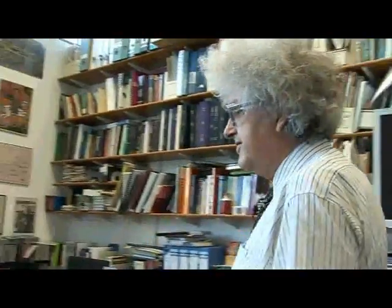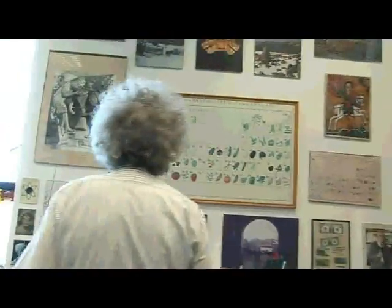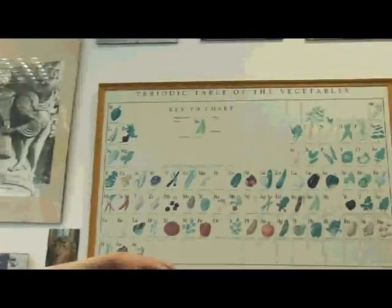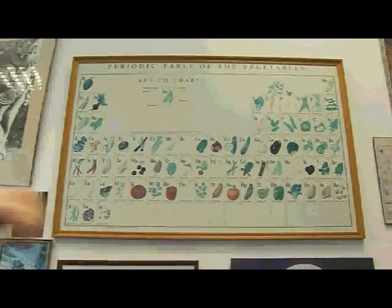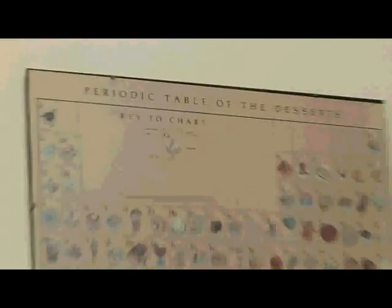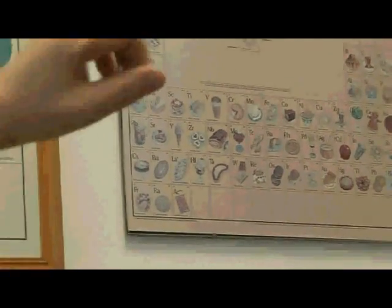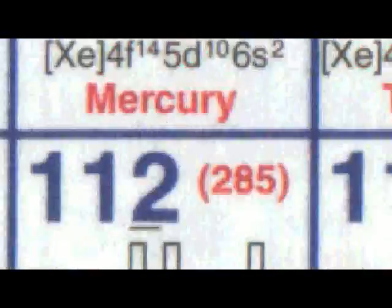And then over here are two more, which are really mad, but I like having them here because it confuses my students sometimes when they need a bit of cheering up. There's this one, which is the periodic table of the vegetables, and then over here is the periodic table of the desserts, which has various puddings and so on — I don't really understand the symbolism of it at all, but it looks quite fun.